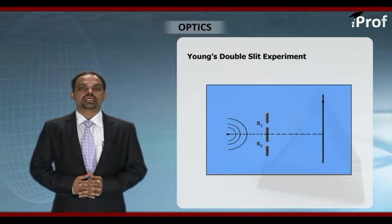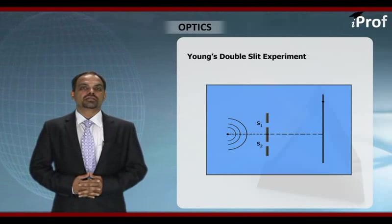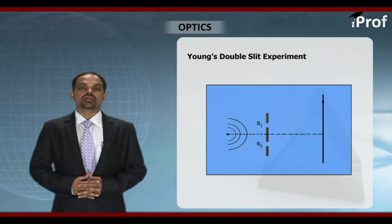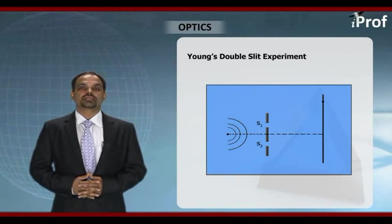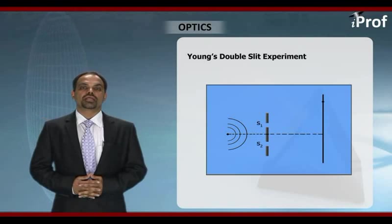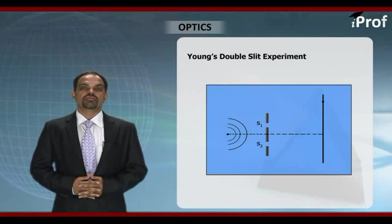In the original experiment, instead of slits, Young used holes. So initially it was called Young's double hole experiment. It was a very historical experiment and it was a very decisive experiment as it gave a death blow to the theory given by Newton which was based on particle nature of light. This experiment proved beyond doubt that light has wave nature.